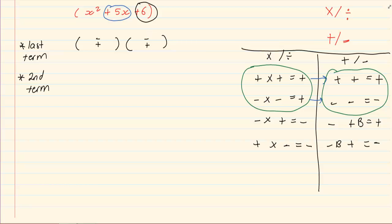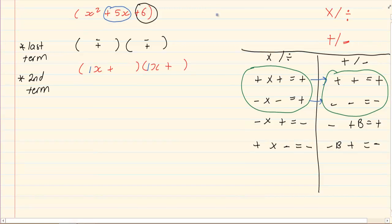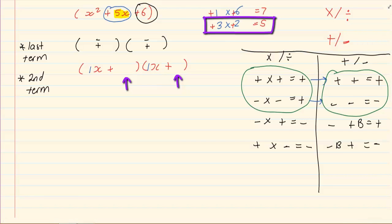Let us practice. I know my answer is now going to be a plus and a plus. I know that the first term is going to be x times x, because we are only working with 1x times 1x. Now, let's work with 6. Six can be broken down into 1×6 or 3×2. We know both numbers are going to be positive. What happens when I add them? 1 plus 6 is equal to 7; 3 plus 2 is equal to 5. I want a 5, so the answer I'm going to take is 3 and 2.